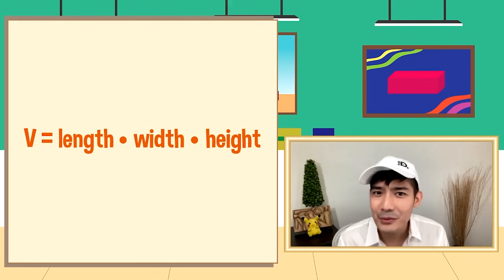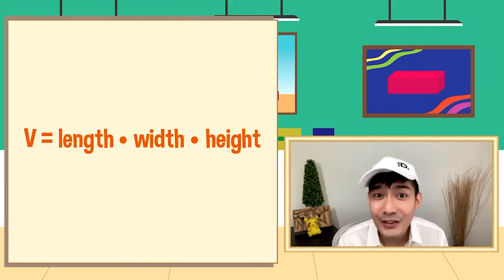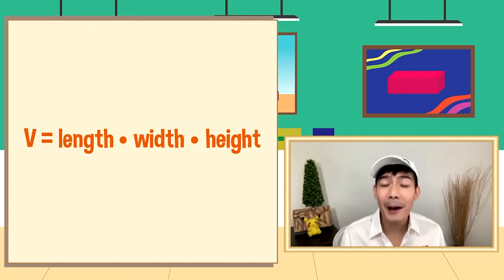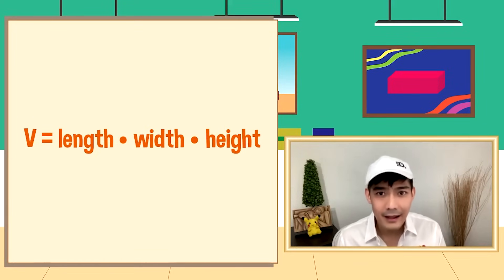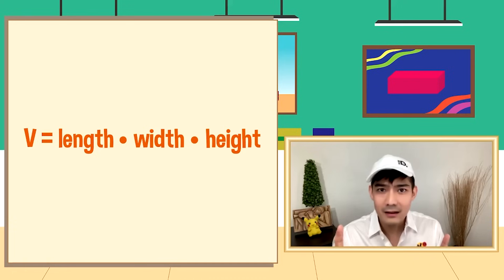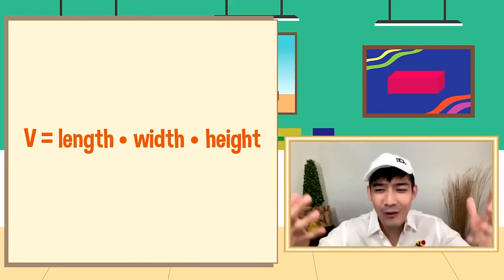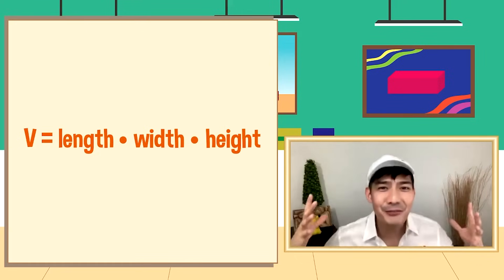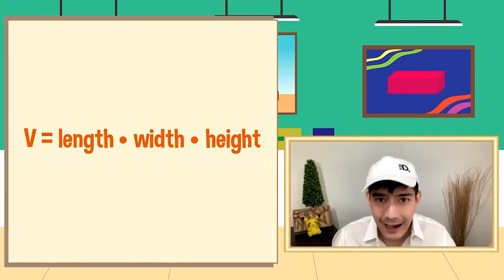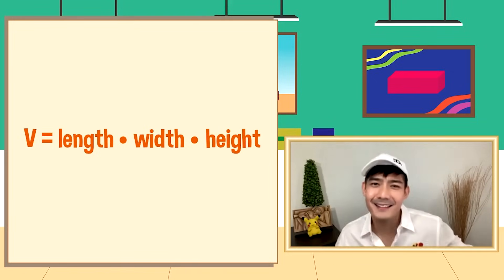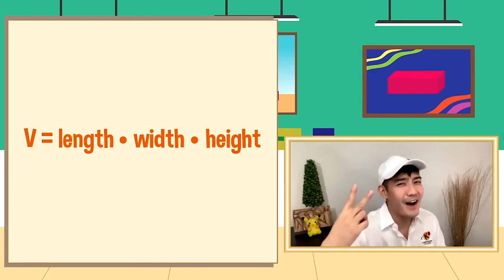Naalala nyo ba yung length times width? Ano ulit yun? Area yun — area. At kapag perimeter naman, hindi natin i-multiply, i-add natin: length plus length plus width plus width. Ang daming mga balik na konsepto — naaralan natin yung perimeter, naaralan natin yung area, at ngayon alam na alam na natin ang volume.